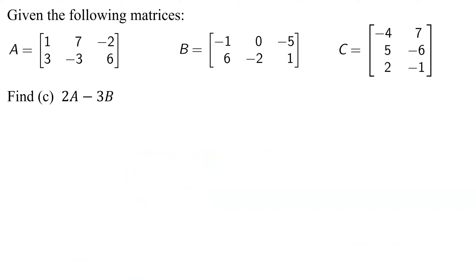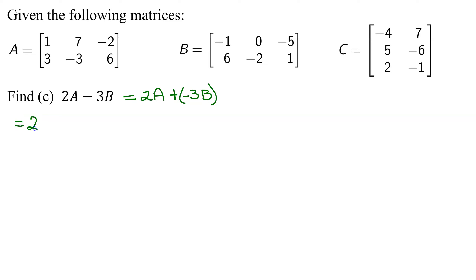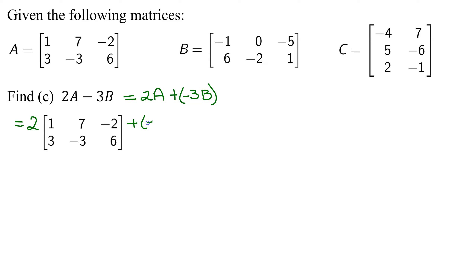The way I'm going to do this is find two times matrix A and then add negative three times matrix B to it. The reason I do that is it's much easier to add in your head than subtract — you make a lot fewer mistakes. So I'm going to have two times matrix A, and then add negative three times matrix B to that. Now we need to get busy with the arithmetic.